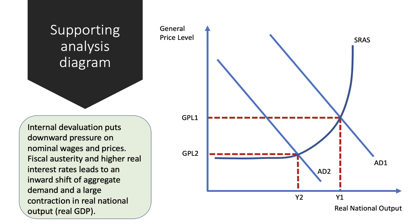Here's the supporting analysis for internal devaluation. You could show an inward shift of the aggregate demand curve, causing the general price level to fall and real output to contract from Y1 to Y2. Typically, fiscal austerity and higher interest rates lead to an inward shift of AD and quite a big fall in real national output.